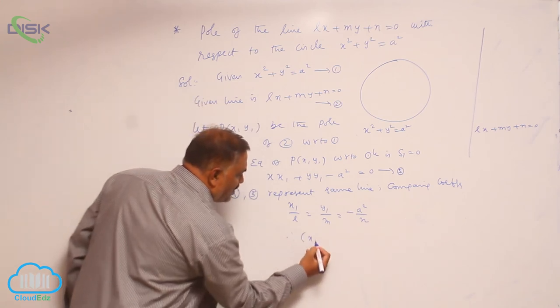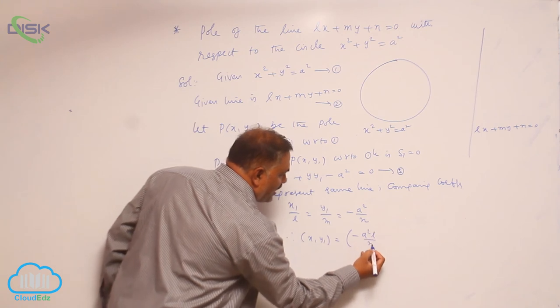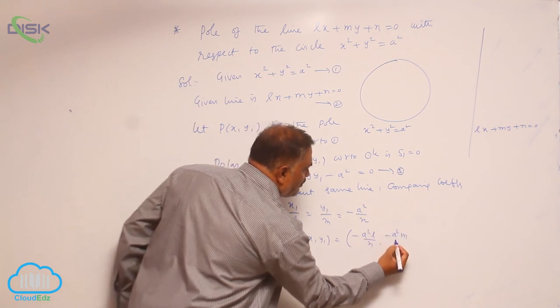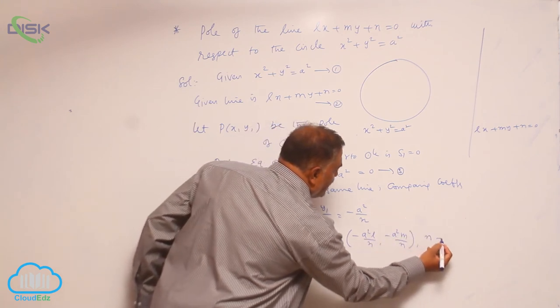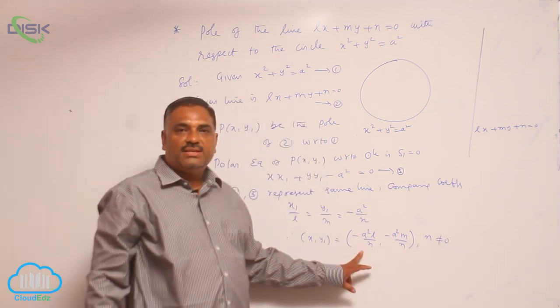Therefore, (x₁, y₁) is given by (-a²L/n, -a²m/n). Clearly, n ≠ 0 because division by 0 is not accepted.